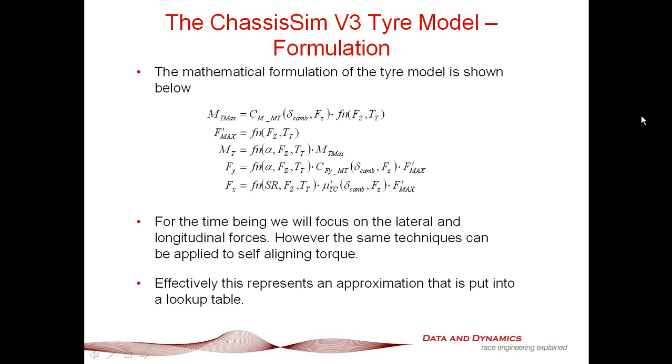So what we've got here is that we've basically got our traction circle radius and our self-aligning torque which is primarily a function of the load on the tire and the temperature on the tire. And where camber comes in is that camber comes into this little puppy right here.